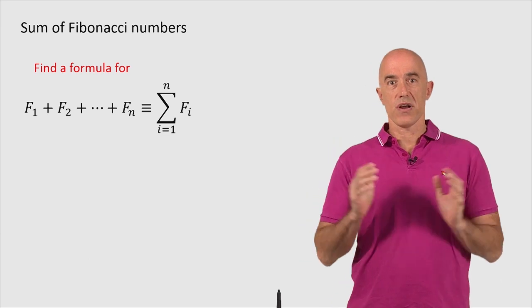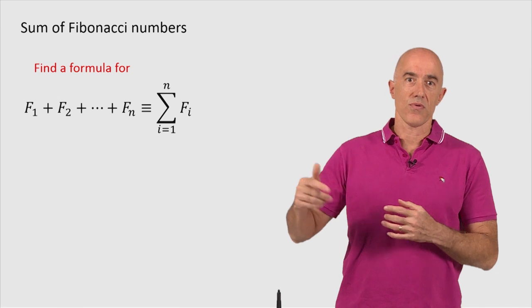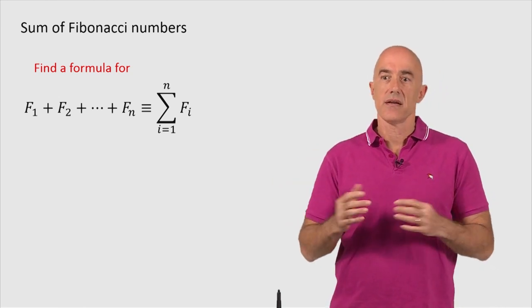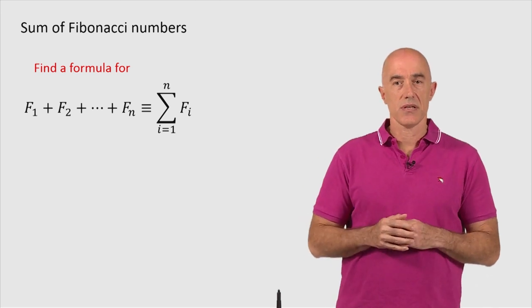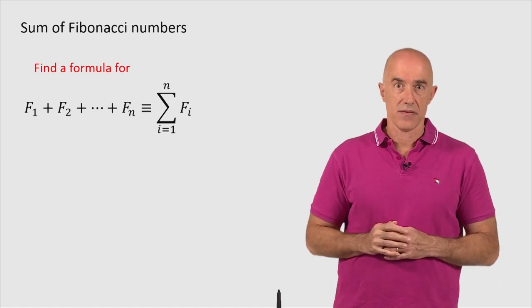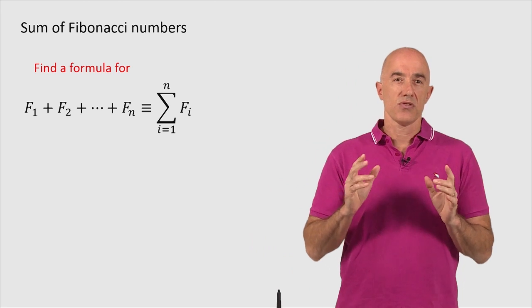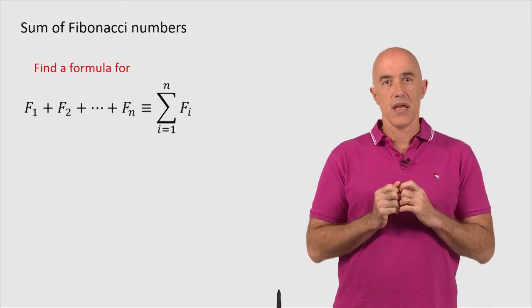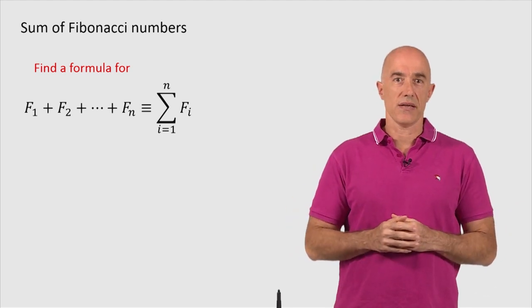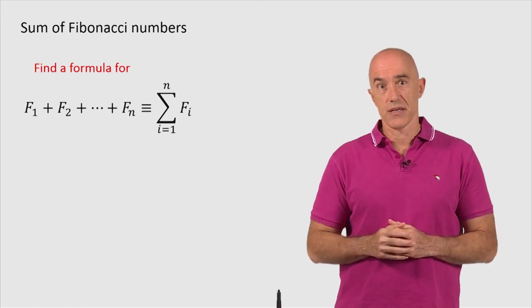So what we want to do is we want to find a formula for F1 plus F2 all the way up to Fn. The notation of writing that is a sigma notation. It says the sum from i equals 1 to n of F sub i. So what we're going to do is we're going to try and discover the formula. And then as mathematicians, I will show you a direct proof of the formula once we've discovered what it is.